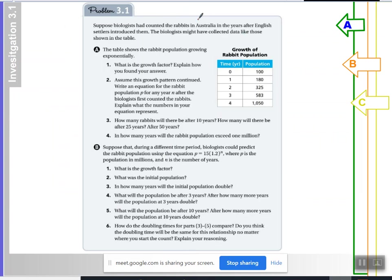Suppose biologists had counted the rabbits in Australia in the years after the English settlers introduced them. The biologists might have collected data like those shown in the table. And so, we're looking at this data right here. You're going to use this table to find the growth factor. You're also going to have to find the initial population. And then, you're going to create an equation using P for population and N for the number of years. And then, you're going to use that equation to figure out how many rabbits there were after 10 years, 25 years, and 50 years. So, in what year will we get at least a million rabbits?